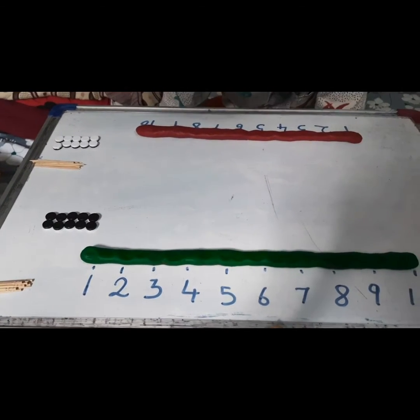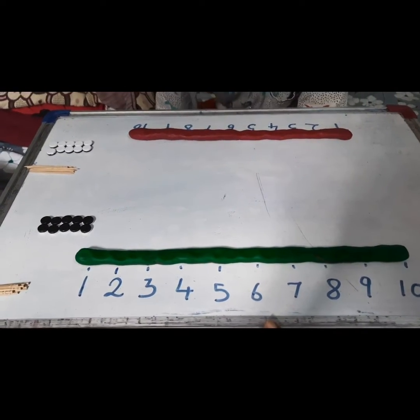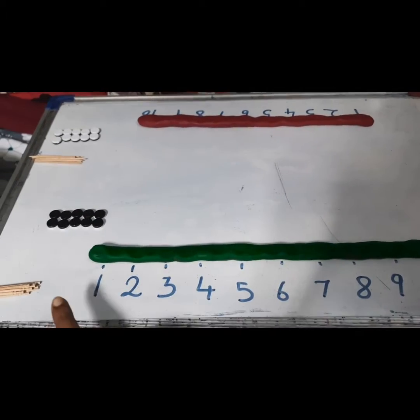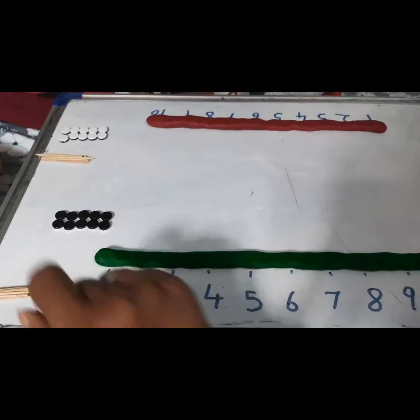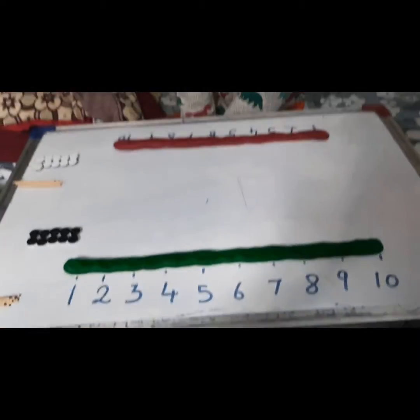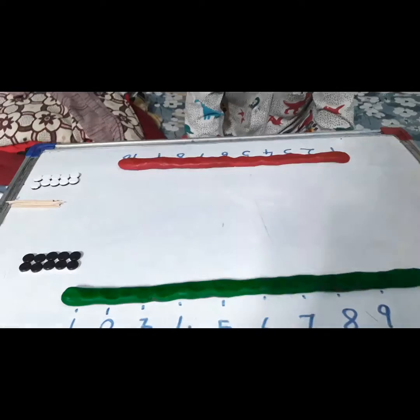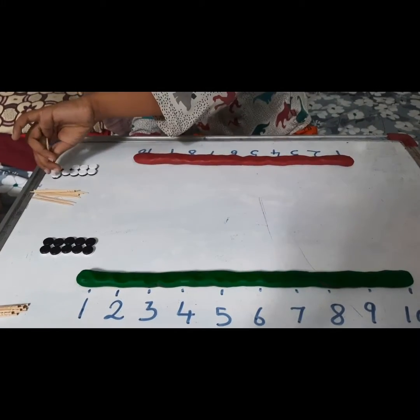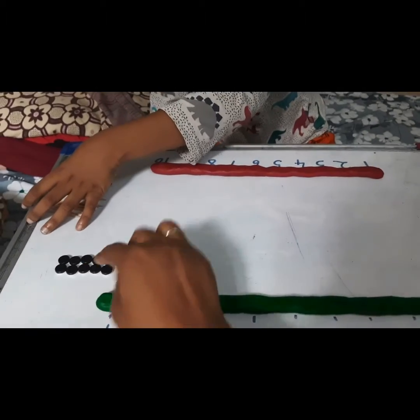You can watch previous videos I've shared in my channel. Here I'm using clay, numbers, toothpicks, and a play dice. Myself and Vaishna are going to play this game. You can use a timer. Let's start, Vaishna. First we'll do with the play dice, then with the toothpick.